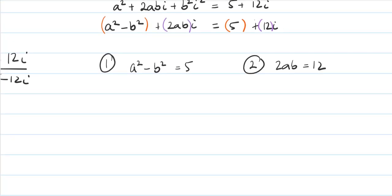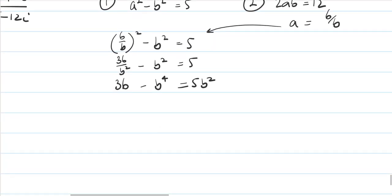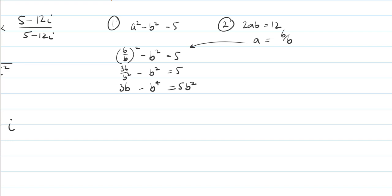From equation (2), a equals 6 over b. Bringing that back into equation (1): 6 over b squared minus b squared equals 5, which gives 36 over b squared minus b squared equals 5. Multiplying everything by b squared: 36 minus b to the power of four equals 5b squared. Rearranging: b to the power of four plus 5b squared minus 36 equals 0.